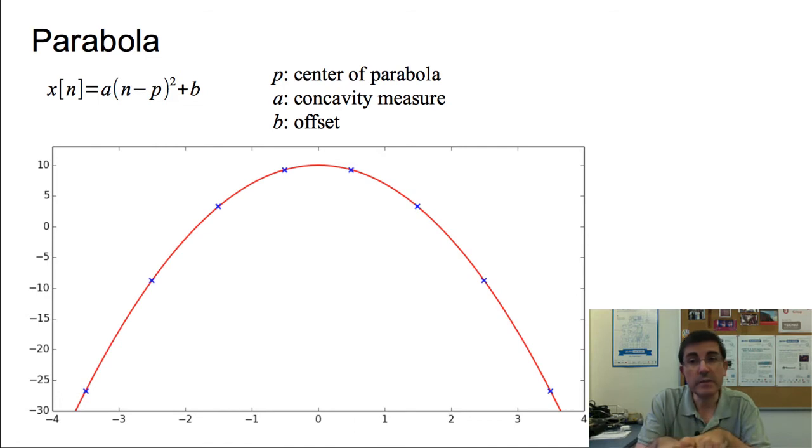We can do a cheaper interpolation by using, for example, parabolic interpolation. The parabola is a function with a shape quite similar to the tip of the lobe of the spectrum of the analysis window in the dB scale. This is the equation of a parabola, where P is the center of the parabola, A is the concavity measure, and B is the offset. And this is a sampled version of the parabola, so we have different values n. This is very similar to what we would see as a sampled function.